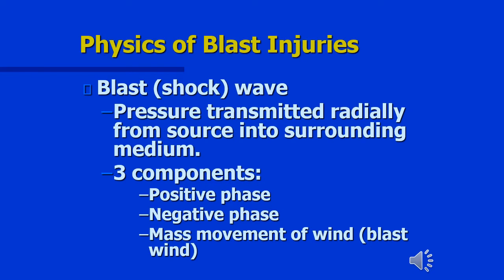To understand the physics of blast injury, you should first understand two things. The bomb design consists of three components: container, explosive material, and detonation device. The container is usually a pipe or glass cylinder made of any suitable material such as plastic, glass, or metal that can be sealed airtight. The explosive material, the second component, may be some solid, liquid, or gas.